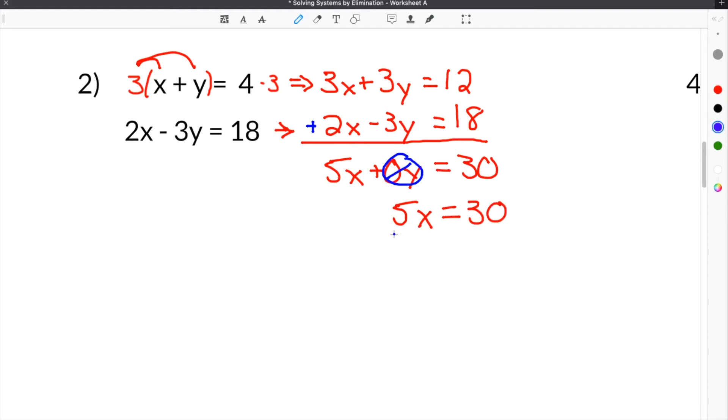Then in order to solve for x, we're going to divide both sides by 5. So these cancel, and then 30 divided by 5 is 6. Now we know x equals 6.